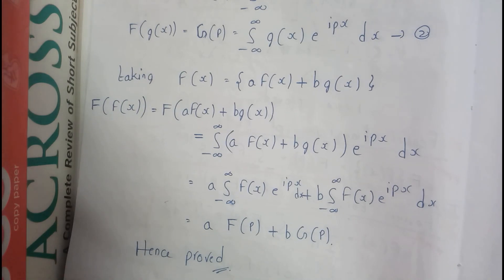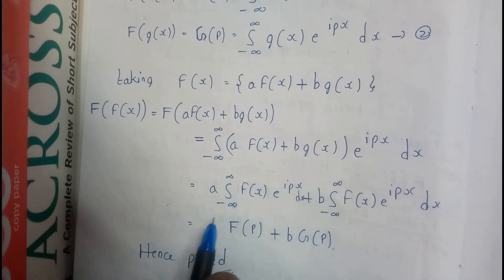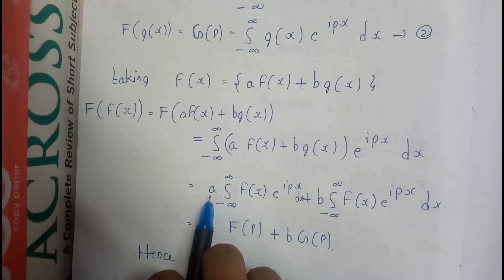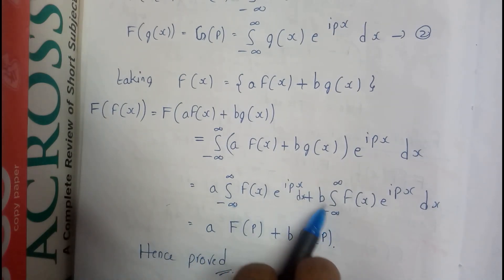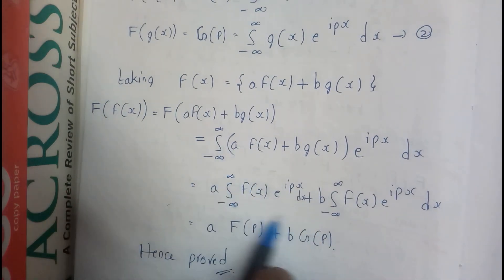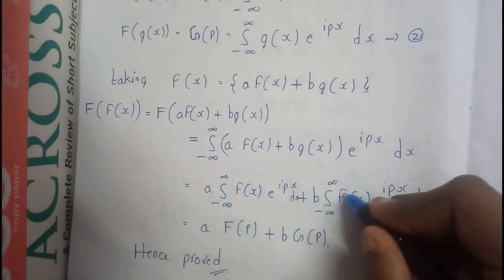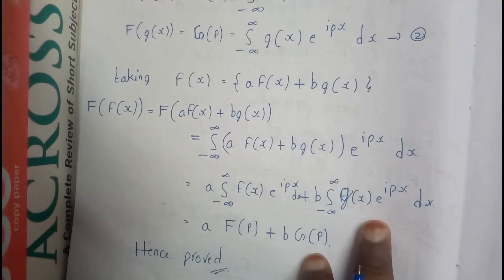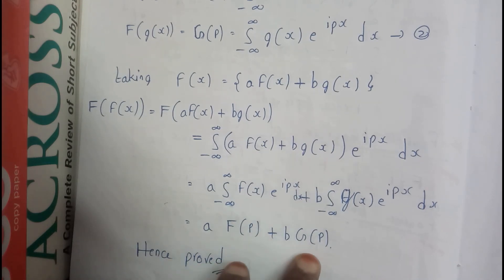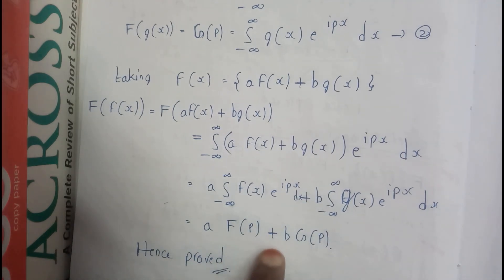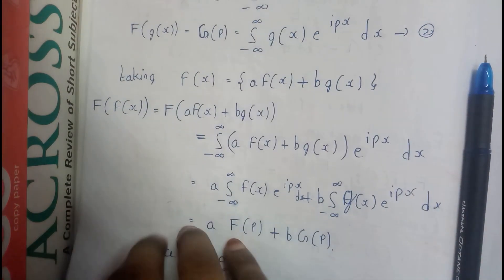We can split the integrals when there is an addition or subtraction operation. Since a and b are constants we throw them outside: a times the integral from minus infinity to infinity of f of x times e to the power ipx dx, plus b times the integral from minus infinity to infinity of g of x times e to the power ipx dx — which is nothing but a times capital F of p plus b times capital G of p. Hence proved. I hope everyone is now clear with the Fourier transform, inverse Fourier transform, and the linearity property.